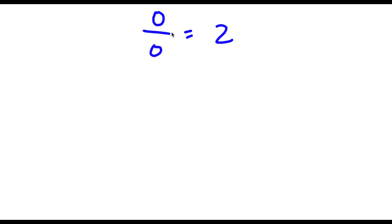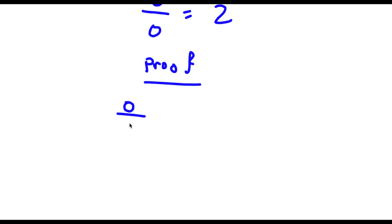Alright, so we have 0 over 0 is equal to 2. For my proof I'm going to first start with 0 over 0. Well, 0 is the same thing as 1 minus 1, so now I'm going to have 1 minus 1 over 1 minus 1.